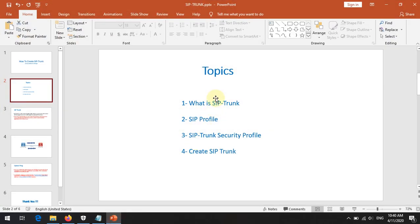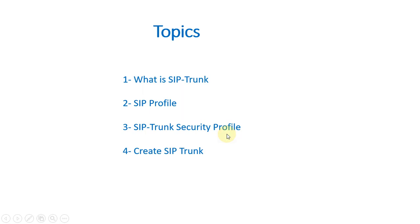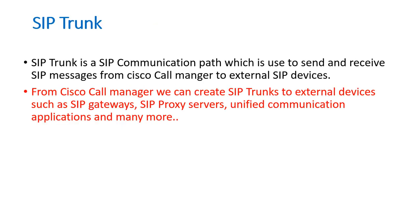Hello my friends, today we are going to discuss how to create a SIP trunk in Cisco Unified Call Manager. There are four topics: what is a SIP trunk, how to create a SIP profile, a SIP trunk security profile, and then how to create the SIP trunk. A SIP trunk is basically a SIP communication path used to send and receive SIP messages from Cisco Call Manager to external SIP devices — such as external SIP gateways, SIP proxy servers, unified applications, and third-party PBXs.